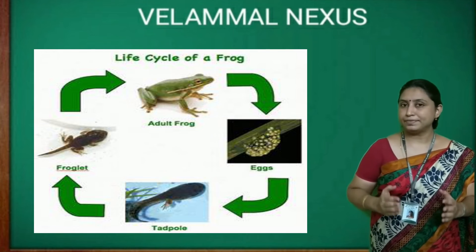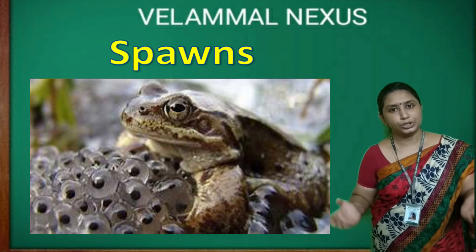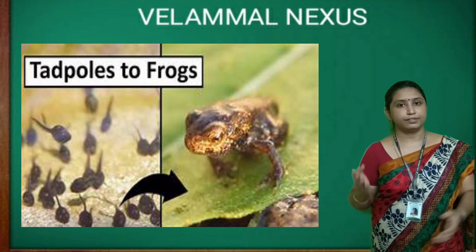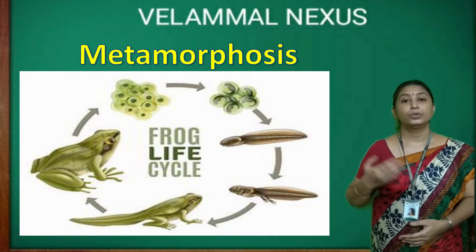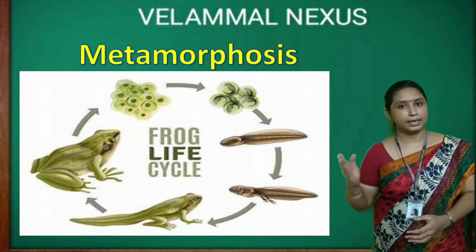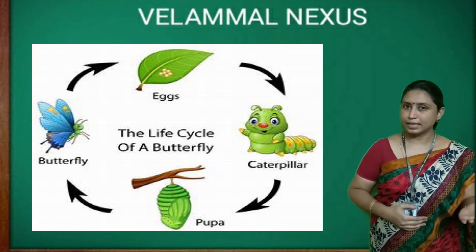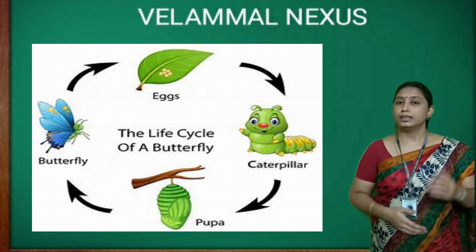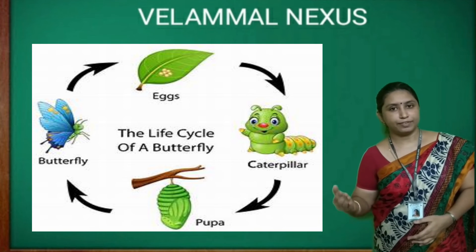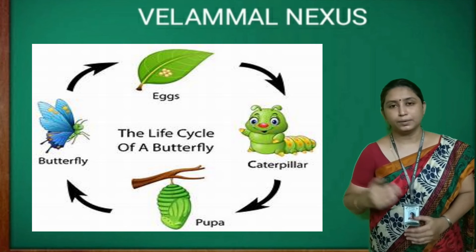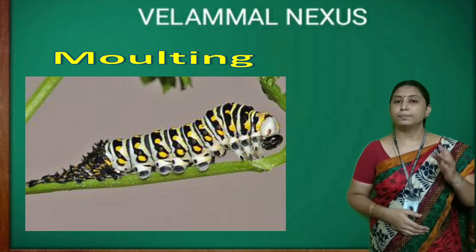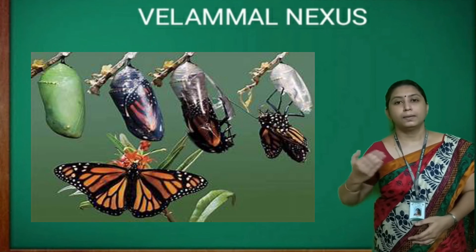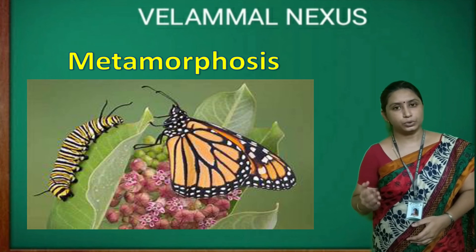We also learnt about the life cycle of frog. Frogs lay eggs in water in large clusters called spawns. A tadpole hatches out of each egg and looks very different from an adult frog. It undergoes several changes through a process called metamorphosis before becoming an adult frog. Butterflies also reproduce by laying eggs on leaves. The young one, a caterpillar, hatches out. The caterpillar sheds its skin and becomes a pupa, also called chrysalis — this process is called moulting. In the final stage, the pupa becomes an adult butterfly. Butterflies also show metamorphosis.